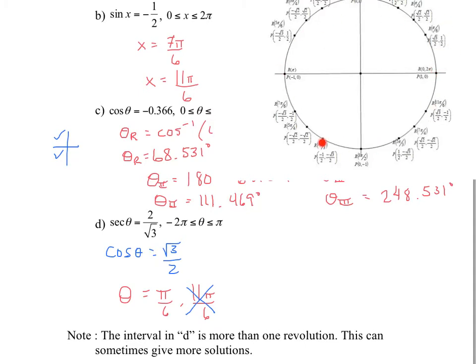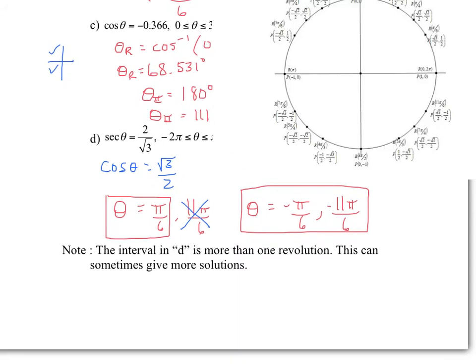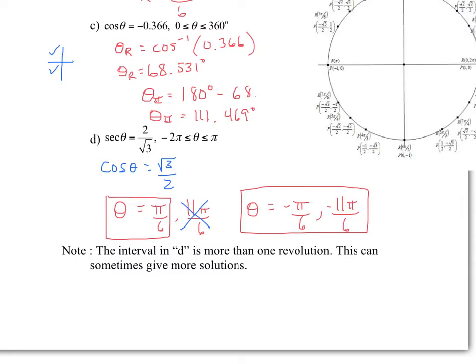We need to find the values on the negative rotation. If π over 6 is one solution, then negative π over 6 is another. Going around the circle, if 11π over 6 corresponds to that point, then negative 11π over 6 is also a solution. So the four solutions account for the first positive partial revolution (0 to π) and the full negative revolution (0 to negative 2π).